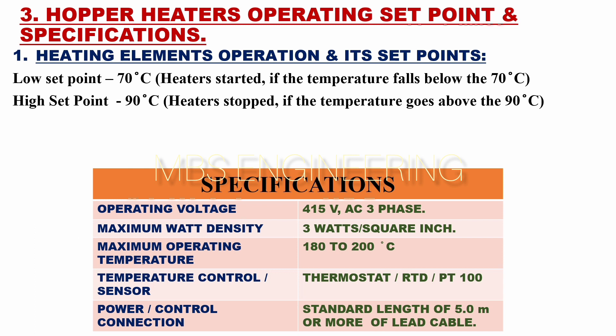The hopper heater specifications: the operating voltage is 415 volt AC, 3-phase. The maximum watt density is 3 watts per square inch. It is designed to provide heat outputs up to 3 watts per square inch, with a maximum circuit size of 4500 watts depending on the application.